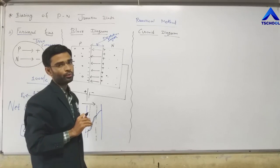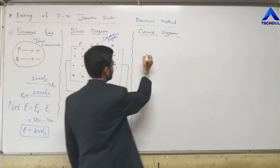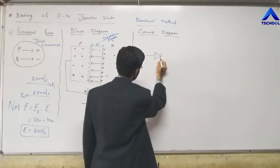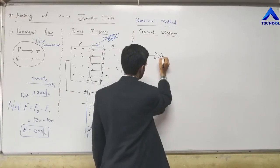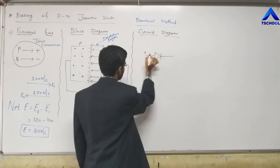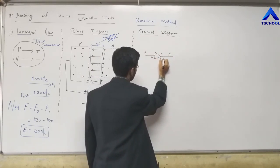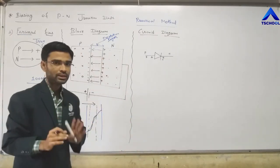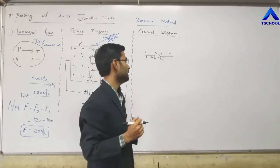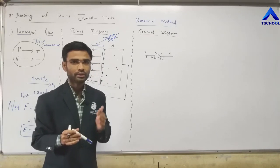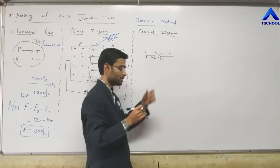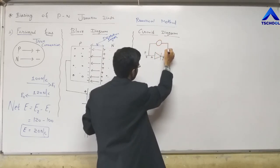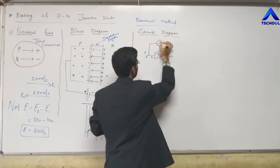The symbol of the PN Junction Diode shows the direction of conventional current flow, with the P-section as the anode and the N-section as the cathode. If we want to measure the voltage, we must connect a voltmeter across this device — across the PN Junction Diode — in parallel, since voltage is always measured in parallel.